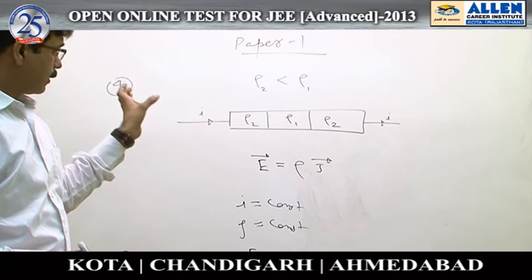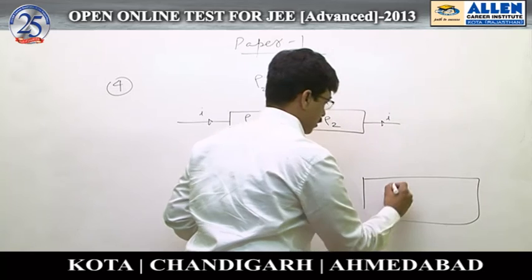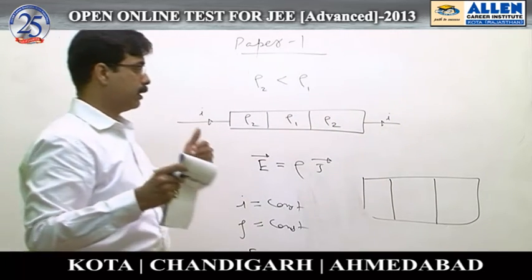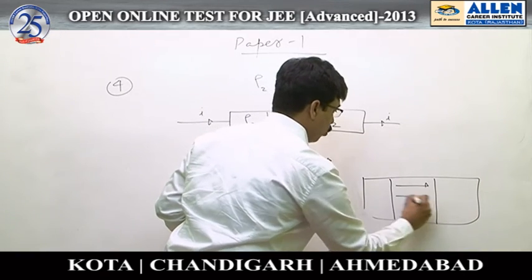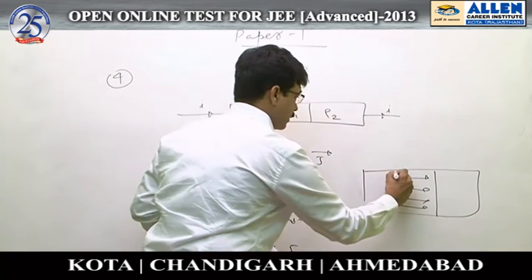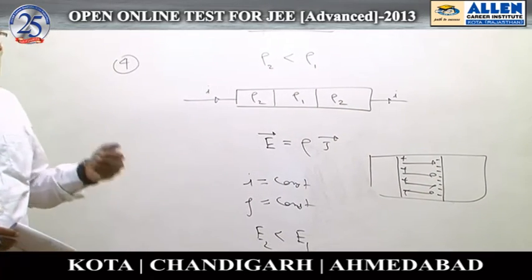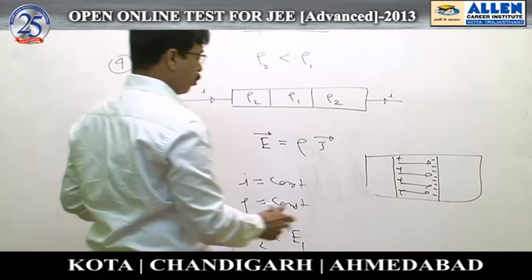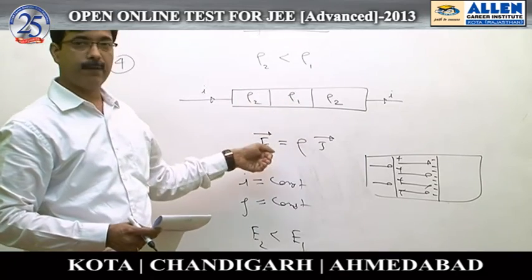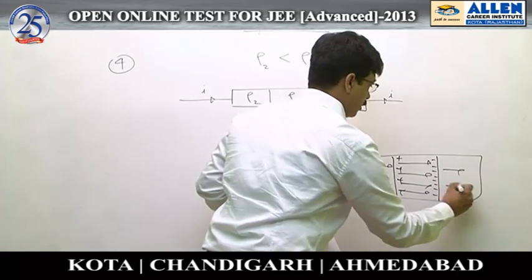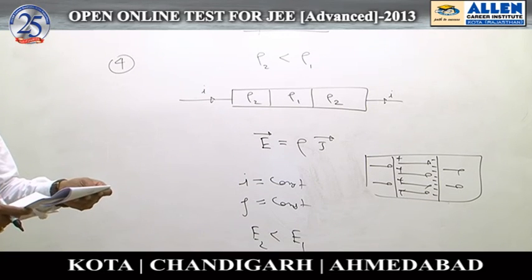There is always accumulation of charge at the interface. Now we draw the field line pattern, keeping in view the nature of the accumulated charges. The field inside ρ₁ is stronger, meaning the induced charges are helping to increase the magnitude of the field there. In material ρ₂, the field is smaller — the same induced charges are reducing the magnitude of the field. So this is the net pattern of electric field lines, which corresponds to option A.